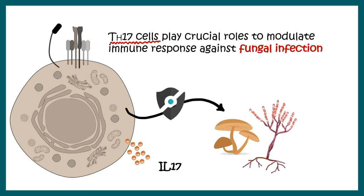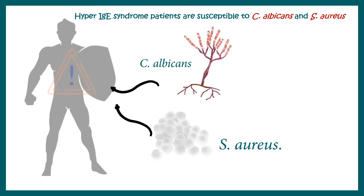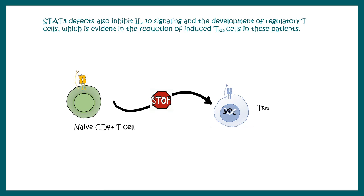IL-17 and IL-22 are both very low in Job Syndrome patients. As a result, Hyper IgE Syndrome patients are very susceptible to Candida albicans or Staphylococcus aureus infections. A normal person is immune to these pathogens and can fight them off, but for a Job Syndrome patient, these infections could be life-threatening.